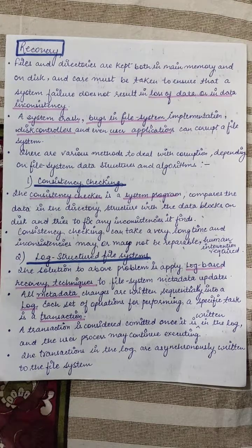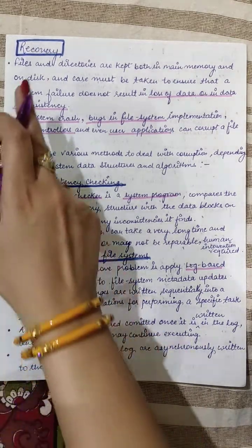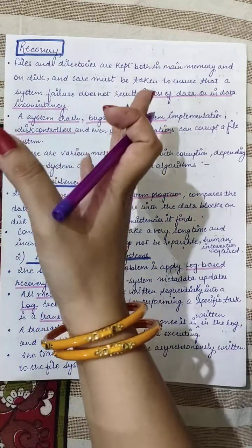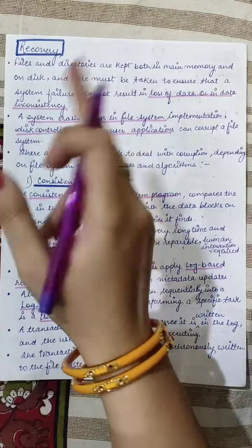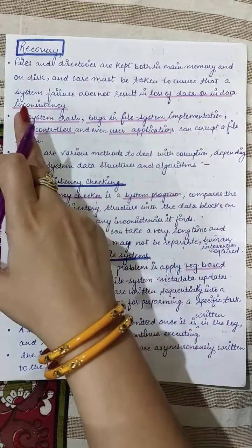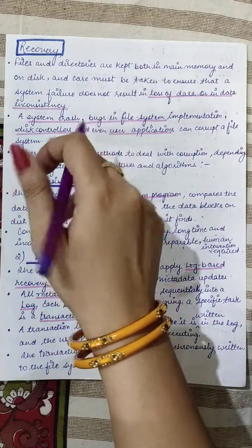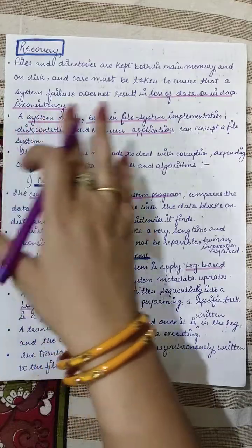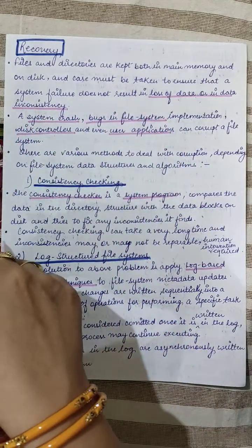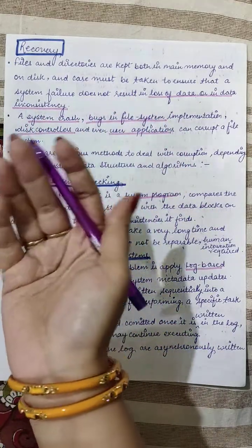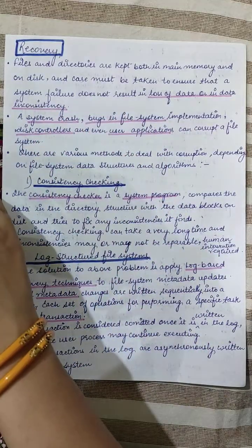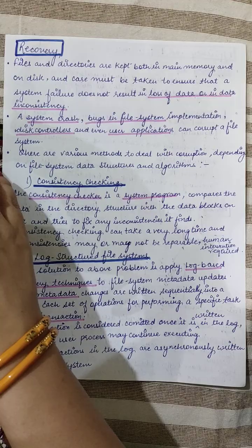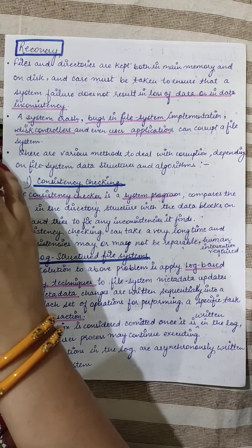The topic for today's class is recovery in operating systems. Files and directories are maintained in main memory as well as on disk, so care must be taken to ensure that if a system failure occurs, it does not result in loss of data or any kind of data inconsistency. The data is stored either in main memory or in secondary storage for permanent storage.